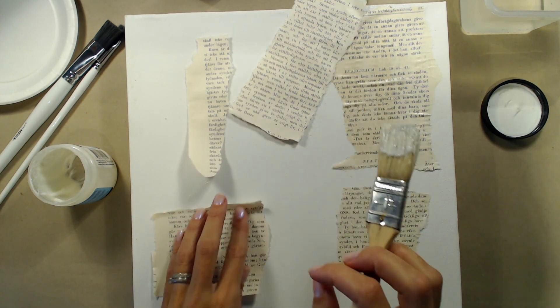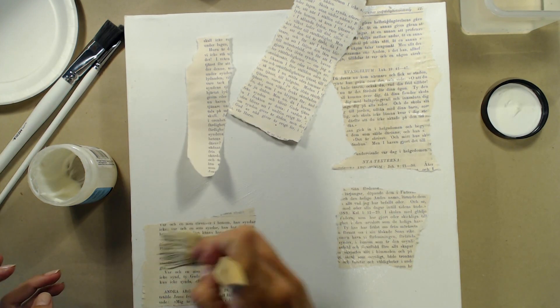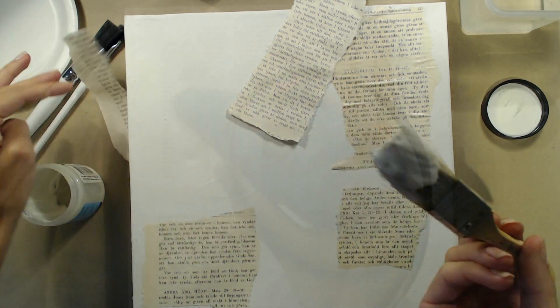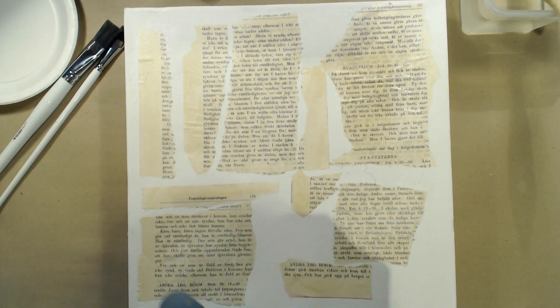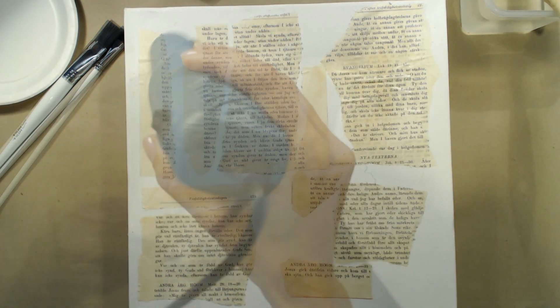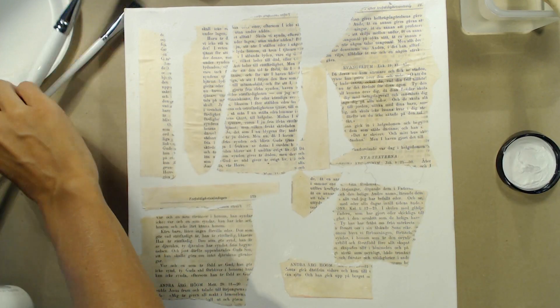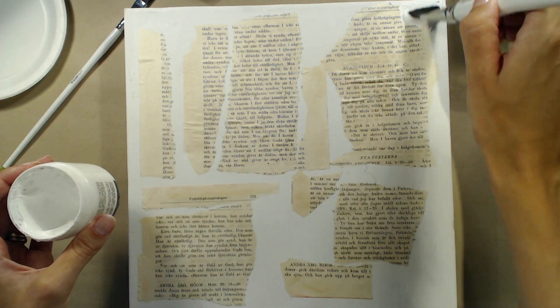If I don't adhere it well it might make the paint fall off from the finished product after a while and I don't really want that to happen. Then when all of the pieces are adhered I'm using my heat gun to speed up the drying process. I don't want to start adding any colors until the medium is completely dried.